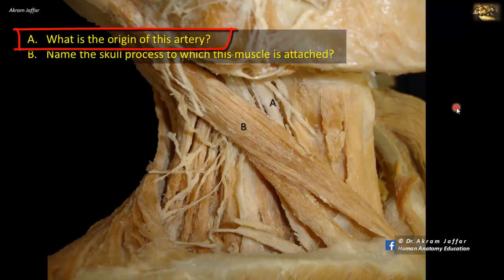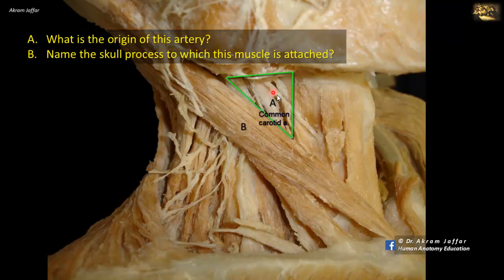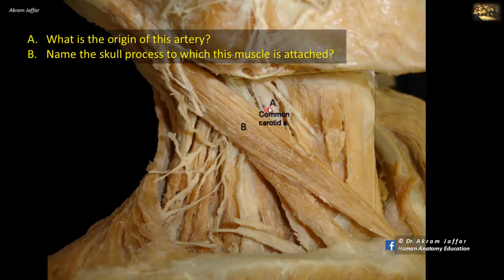What is the origin of this artery? The artery here is the common carotid artery. It's located in the carotid triangle, a subdivision of the anterior triangle of the neck. And this artery is going to divide into external and internal carotid arteries.